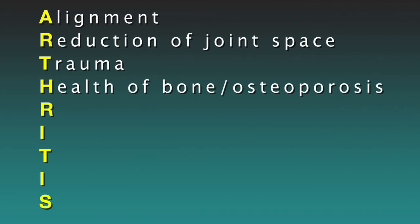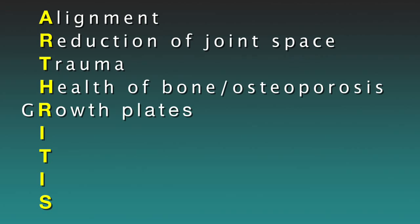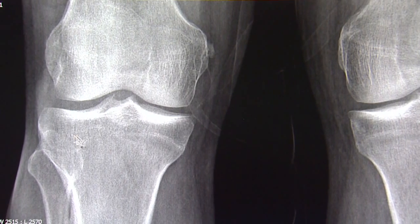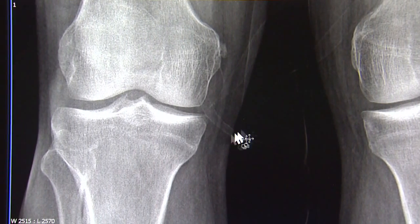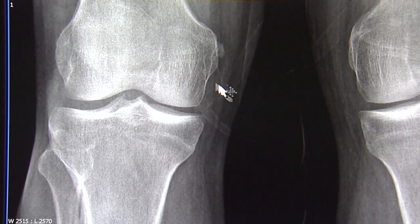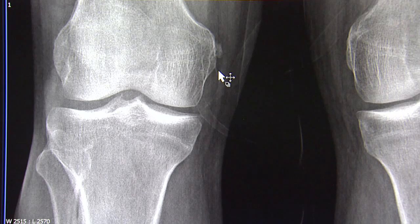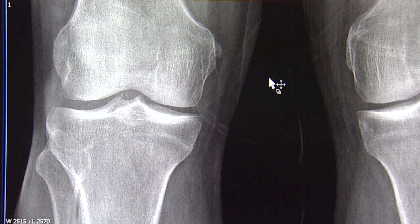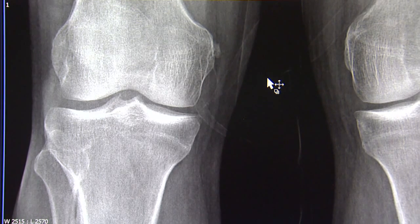The next letter is R, and we use that for growth plates. What I look for is whether there is any evidence that the growth plate is open, or if there is still growth left in the knee joints. We would not expect to see open growth plates in someone over 16; however, in the young patient, we do evaluate the integrity of their growth plates.